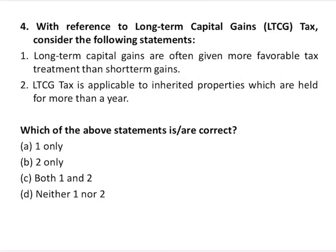Question number four is about long-term capital gains tax. The first statement says long-term capital gains are often given more favorable treatment than short-term gains — this is correct. The second statement says LTCG tax is applicable to inherited properties held for more than one year — this is wrong, because capital gains are not applicable to inherited property as there is no sale, only a transfer of ownership. So only statement one is correct, making option A the correct answer.